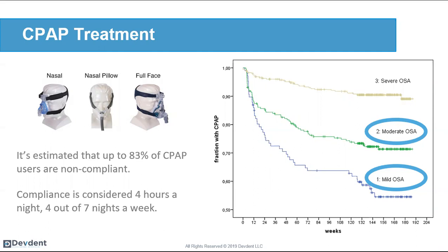Looking at CPAP compliance by severity — severe patients are far more compliant because they have more symptoms and more fear about the risk. Moderate patients are in the middle, and mild patients have the lowest compliance. The mild and moderate ranges are where we fit best as a dental community. We can treat mild and moderate patients just as well as a CPAP machine in most circumstances, and our compliance rate is significantly higher. We can take patients who went through the process and were non-compliant, treat them, and help save others from having to try and fail.